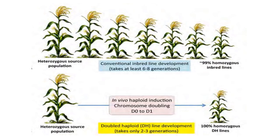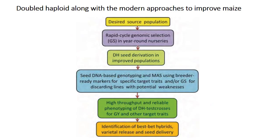The gist: by continuous selfing the vigor is lost. 99% homozygous inbred lines are obtained by continuous selfing, but that takes around 6–7 generations. But by double haploid technology, when heterozygous source population is taken and in vivo double haploid induction or chromosomal doubling from D0 to D1 is done, 100% homozygous lines are obtained. This only takes 2–3 generations. The chromosomal double haploid mechanism can also be combined with other approaches for greater resolution and higher efficiency.